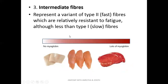Intermediate fibers are those in between Type 1 and Type 2. Red muscle has a lot of myoglobin, white muscle has little myoglobin, and intermediate fibers represent Type 2 fast white muscle which are relatively resistant to fatigue — but less so than Type 1 red muscle. In summary: red muscles act longest without fatigue, intermediate muscles can act for some time, and white muscles act fast but fatigue easily.